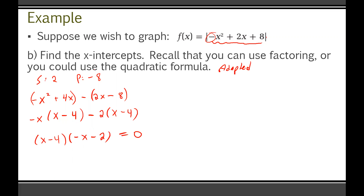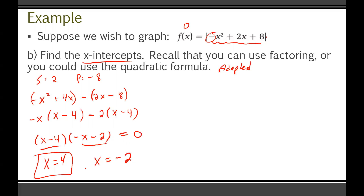Setting that equal to zero helps find the x-intercepts, since x-intercepts are where y equals 0. From (x minus 4) equals 0, x equals 4. From (negative x minus 2) equals 0, x equals negative 2. So our x-intercepts are x equals 4 and x equals negative 2 — these are the points where we cross the x-axis, and they'll guide our graph.